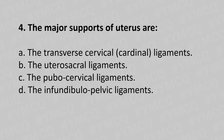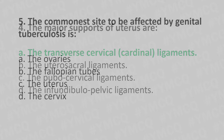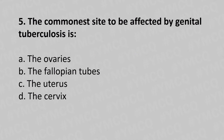Question 4: The major support of the uterus is — option A: the transverse cervical (cardinal) ligaments, option B: the uterosacral ligaments, option C: pubocervical ligaments, option D: the inferior pelvic ligaments. The answer is option A: transverse cervical ligaments.